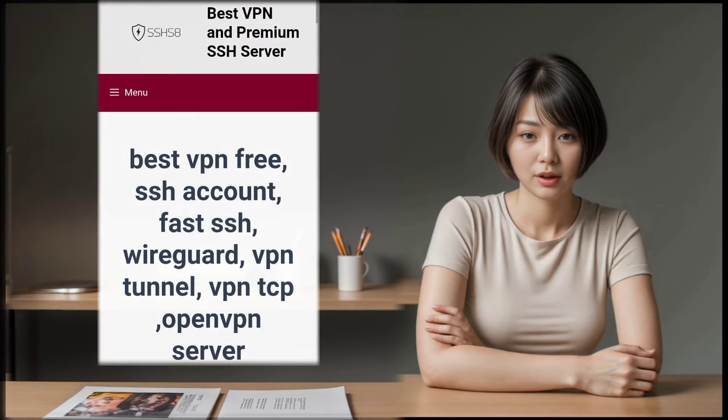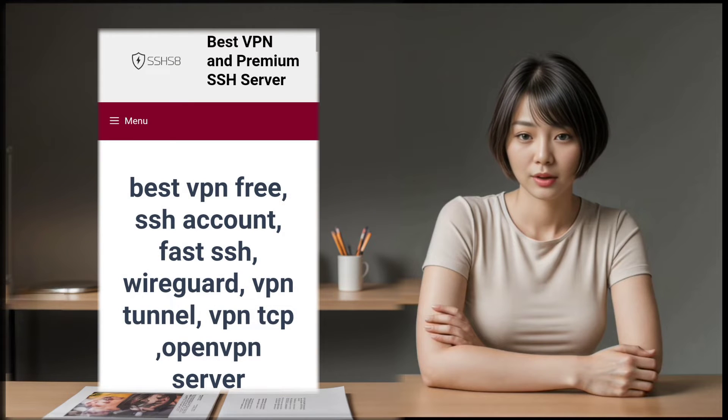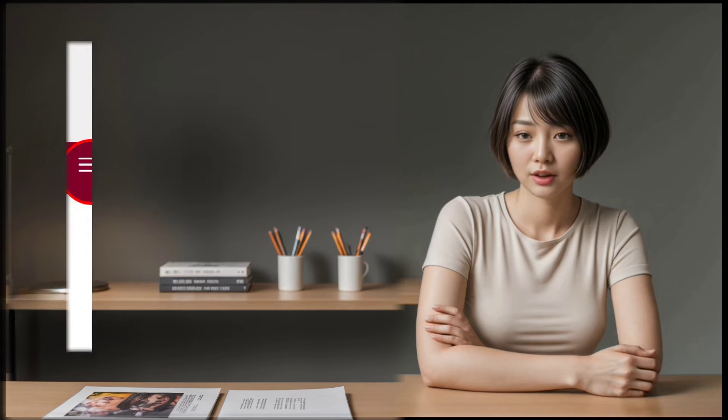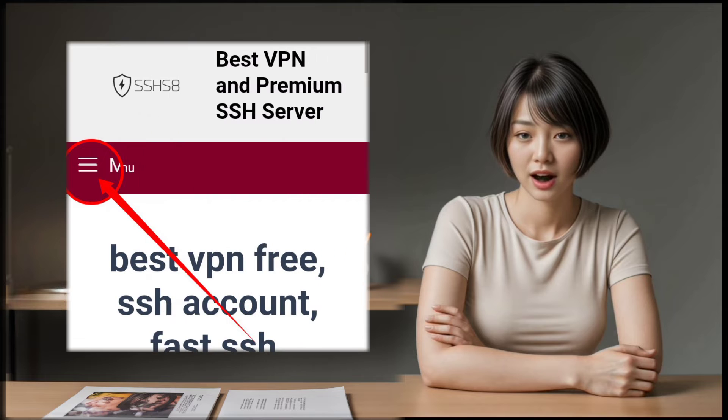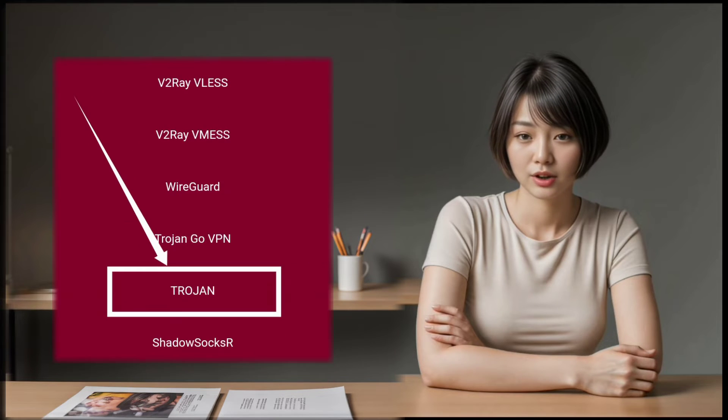Once installed, launch the app and you'll be greeted by the home screen. Now, click on the hamburger icon on the top left corner to access the menu. From the menu, select the Trojan button to continue.